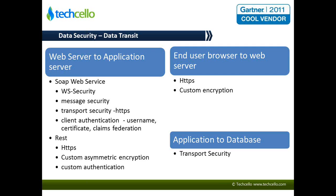Data security while in transit involves different point-to-point communications. For a web application, we are first talking about web server to application server, and then end-user browser to web server. The way to properly secure this is using HTTPS connections. For some sensitive data, like a social security number being transmitted, you could also go in for custom encryption — you do not just want to trust your HTTPS connection, so you could add a custom encryption layer there.